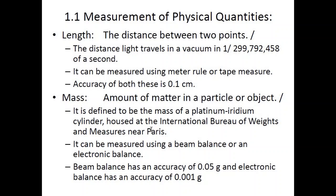Length is the distance between two points. In modern physics, it is defined as the distance light travels in a vacuum in 1/299,792,458 of a second — that distance is one meter. Length can be measured using a meter rule or tape measure, both with an accuracy of 0.1 centimeters. Always remember your answer is only as accurate as the instrument you are using.